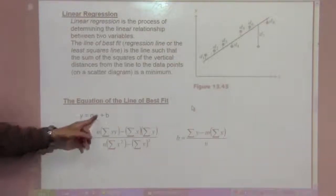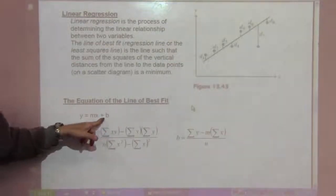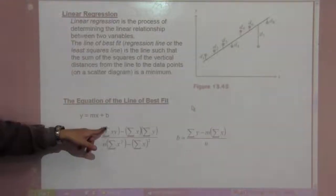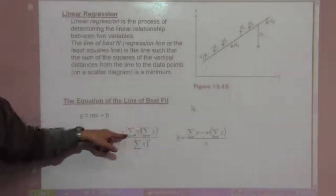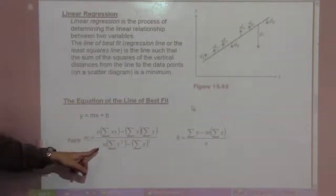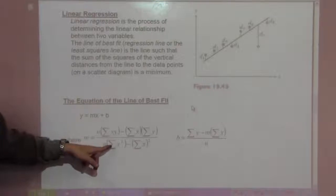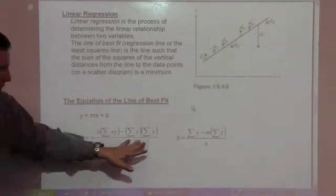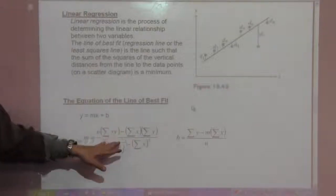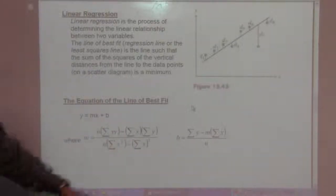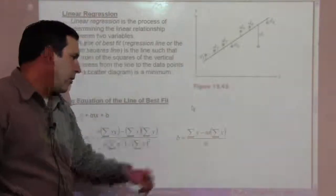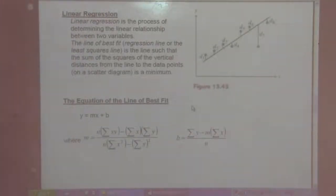This formula will give us the best line that best estimates going through that data set. The equation is y equals mx plus b, where m equals N times the sum of XY minus the sum of X's times the sum of Y's, over N times the sum of X-squareds minus the sum of X's squared. And b equals the sum of Y's minus m times the sum of X's, all over N, the number of data points.